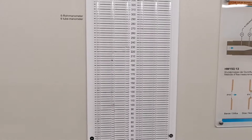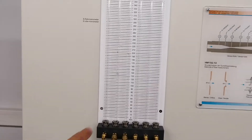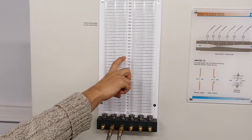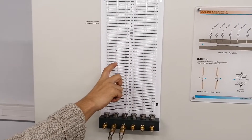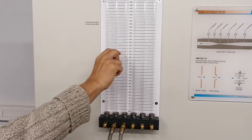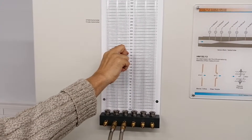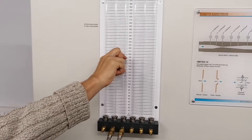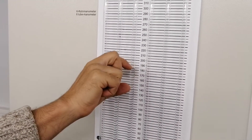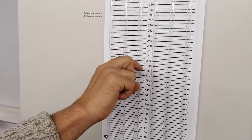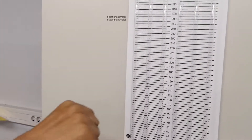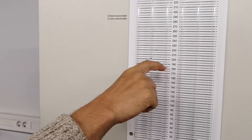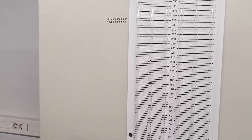Now you can observe: this is the total pressure head, and this is the static pressure head. The difference gives us the dynamic pressure head, which is directly related to velocity. Using the formula — which you can also derive using Bernoulli — we can calculate the velocity.